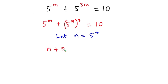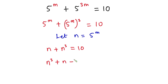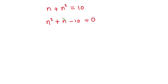Putting this into the equation we have n plus n to the third power is equal to 10. Now let's arrange those with the highest powers first and equate everything to 0, so that we have n to the third power plus n minus 10 is equal to 0.